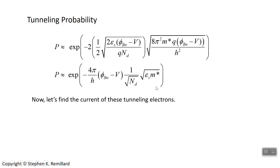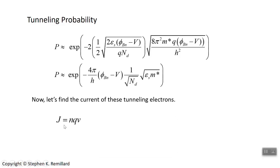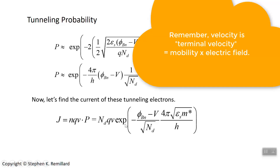If we know the probability that electrons will tunnel through the barrier formed at the junction, we can compute the current. These electrons get across because of a voltage assist from the battery — so it's drift current, not diffusion. We have J equals n times q times the speed of electrons, but not all electrons get through because they hit the barrier. So multiply by the tunneling probability P. The number density n is just the doping density N_d, and velocity is linear in voltage.